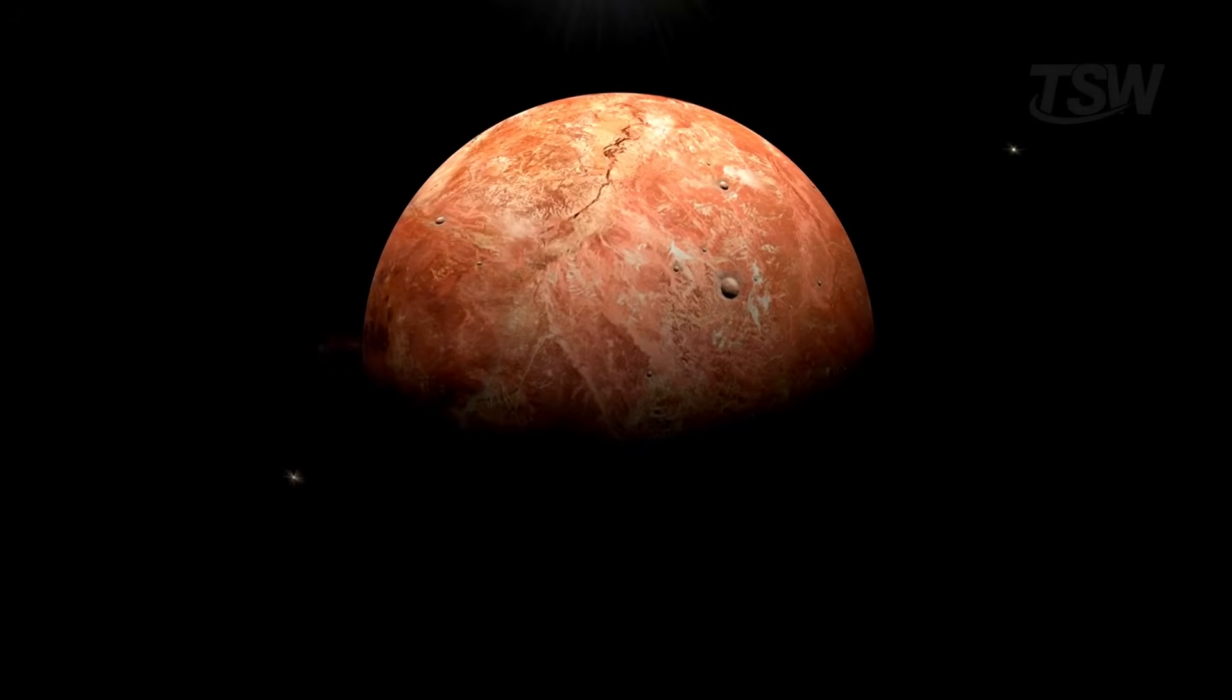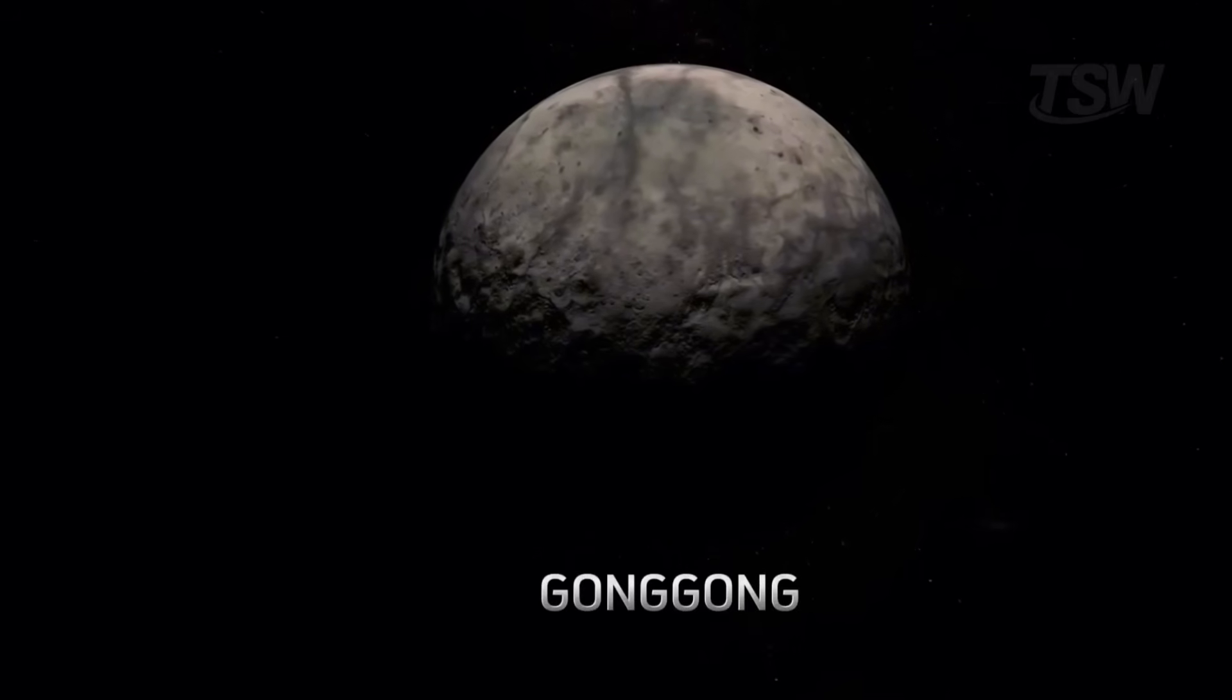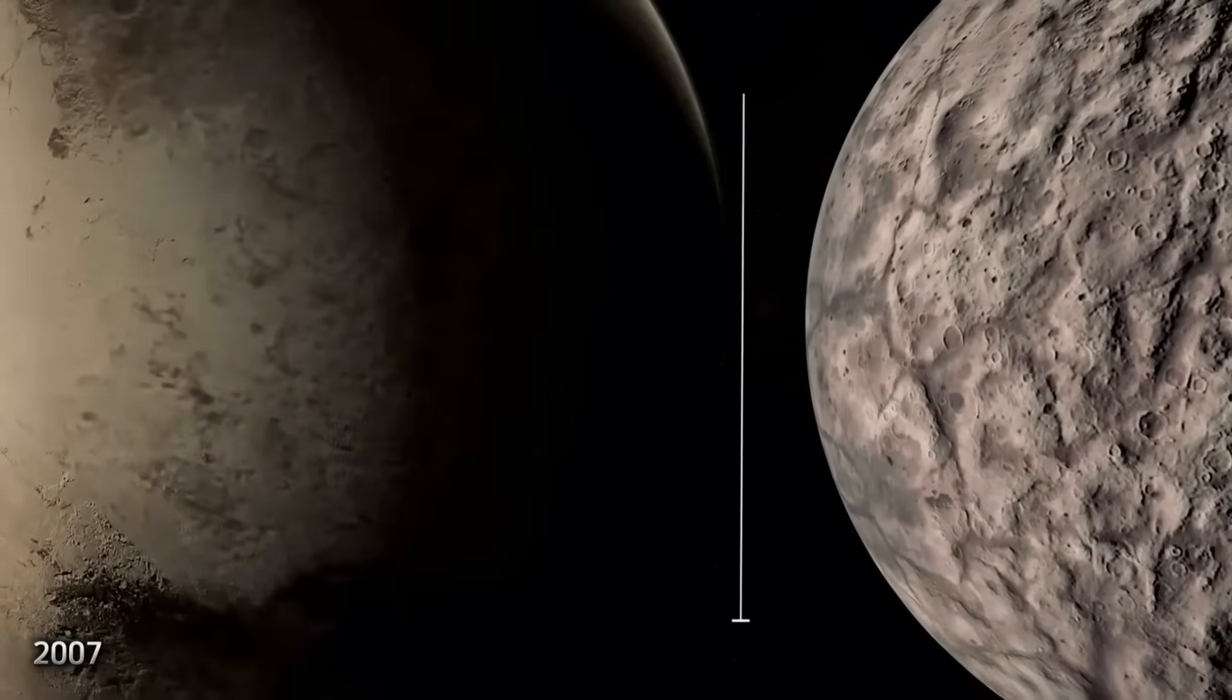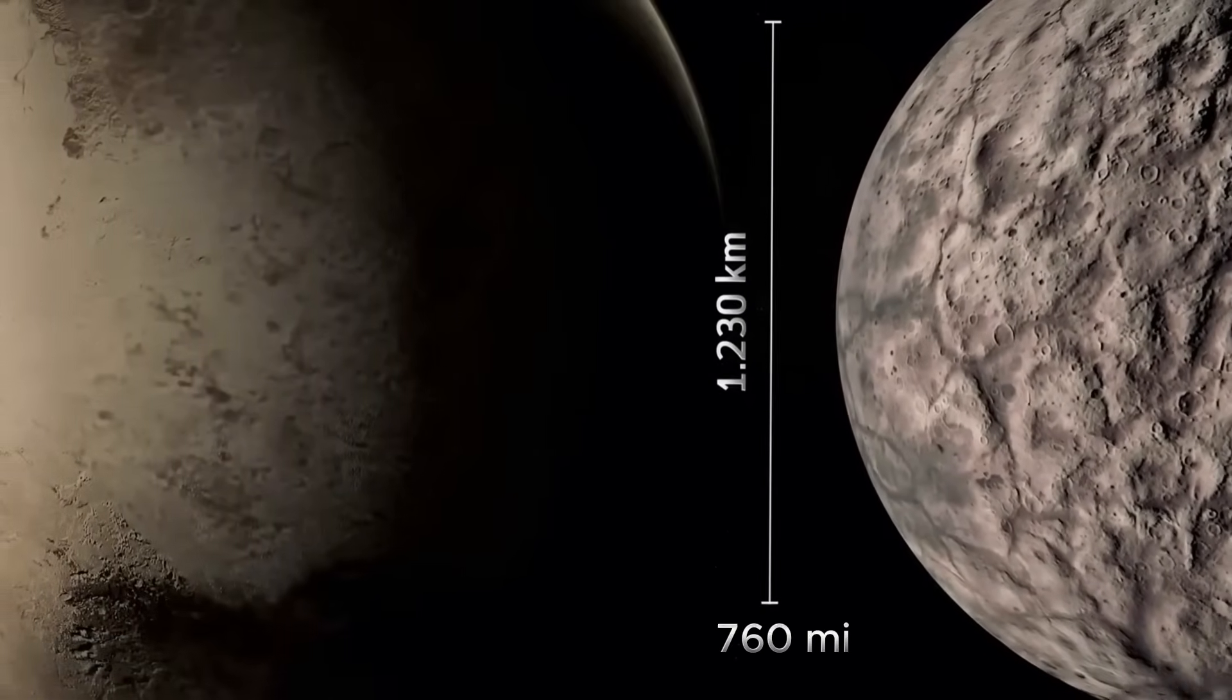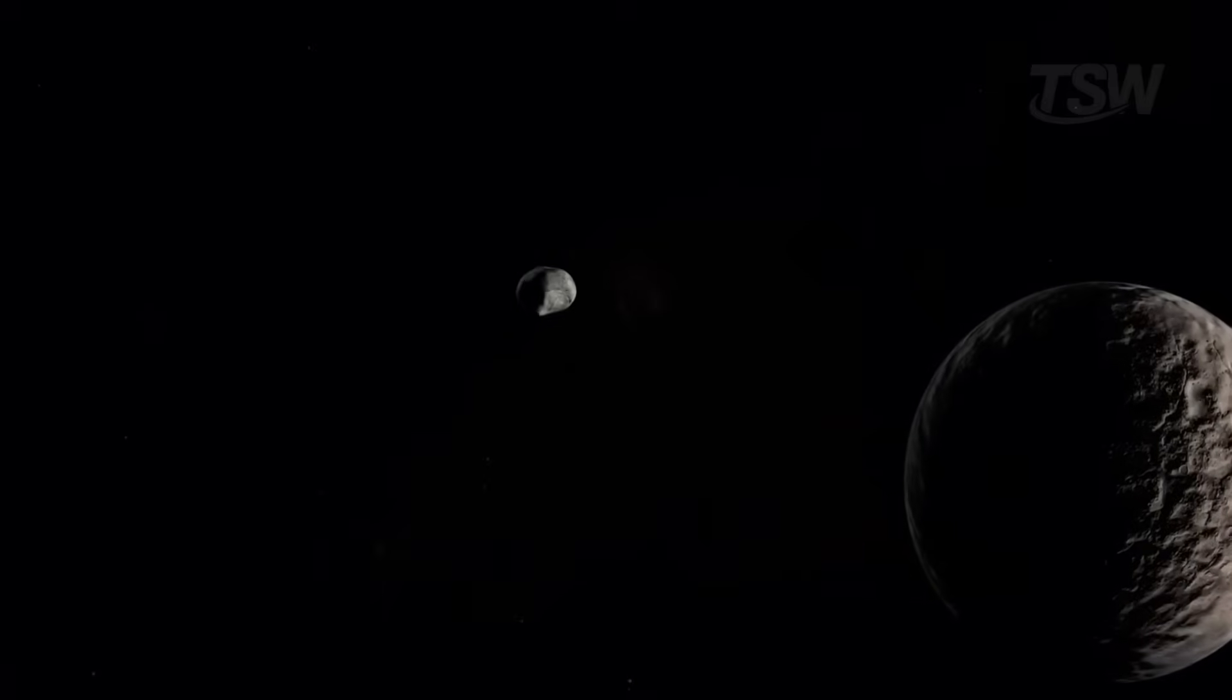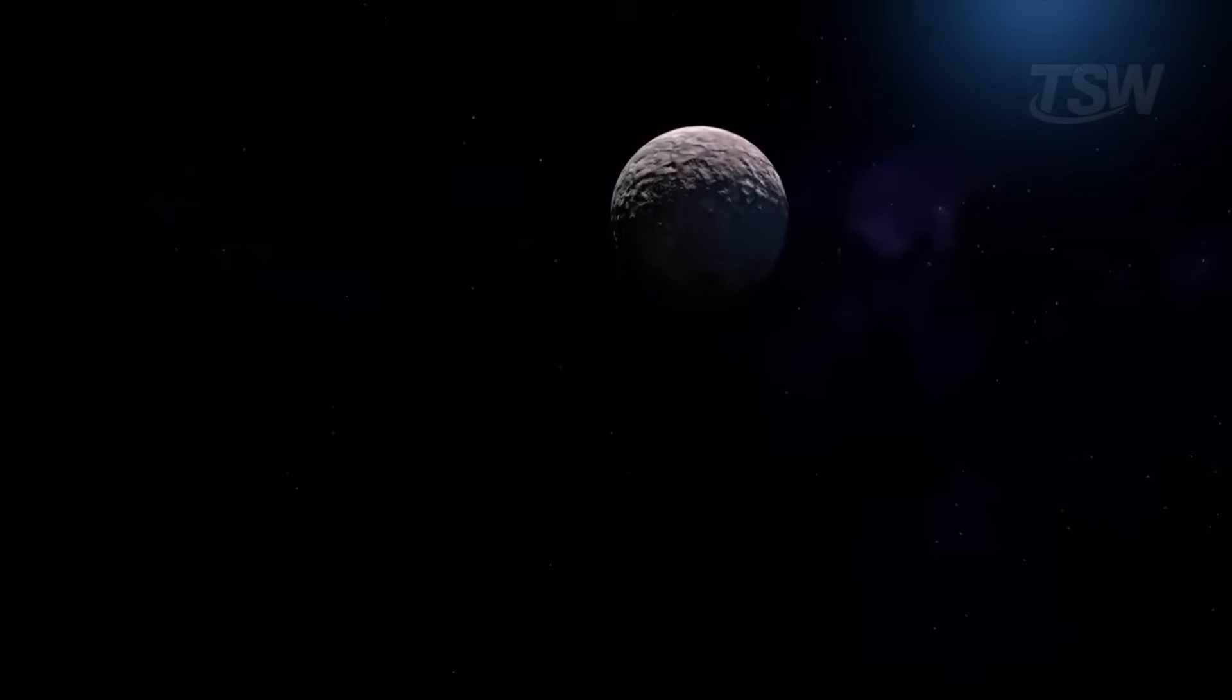Venturing even farther into the outskirts of the solar system, we encounter Gong Gong, a dwarf planet discovered in 2007 that seems straight out of a science fiction story. With a diameter of about 1,230 kilometers, it lies more than 60 times farther from the Sun than Earth, a region so remote that sunlight takes almost nine hours to reach it.